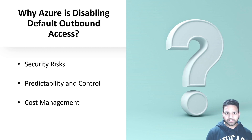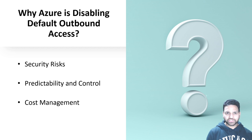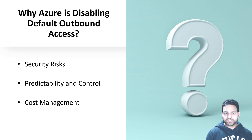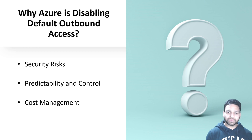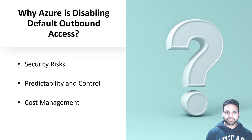The last reason is cost management. Traffic going out of Azure always has a cost attached to it, and if users in your organization who have access to create machines start sending data out of Azure without a proper check, you can get bill shock. Due to these three reasons Microsoft has decided that the default outbound access to the internet will be disabled for all virtual machines created after September 2025.